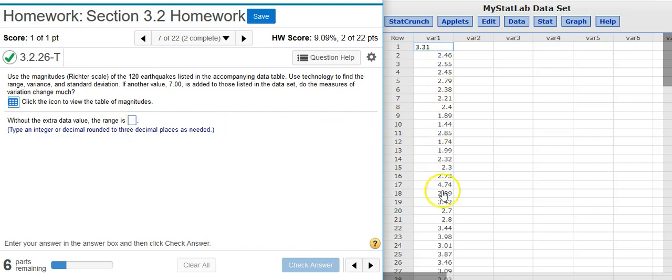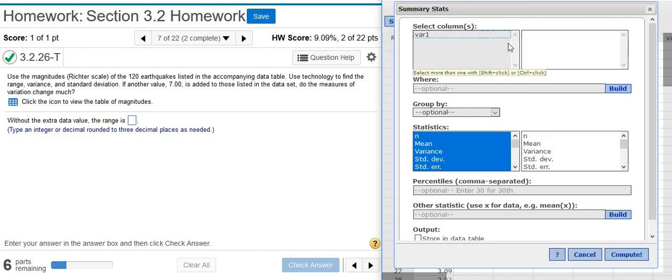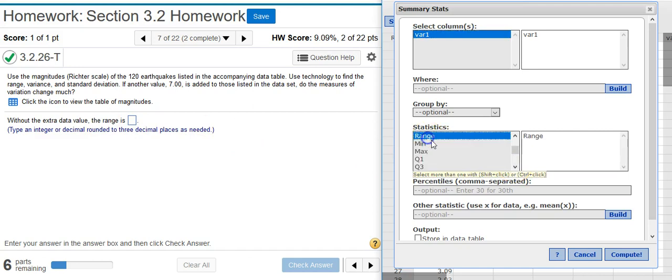So to find the range, I'm simply calculating a statistic for data that I have in my column. To do that, I go to Stat, Summary Stats, Columns. I select the column where my data is located. And then here under Statistics, I'm just going to select the statistic that they're asking for. In this case, the range.